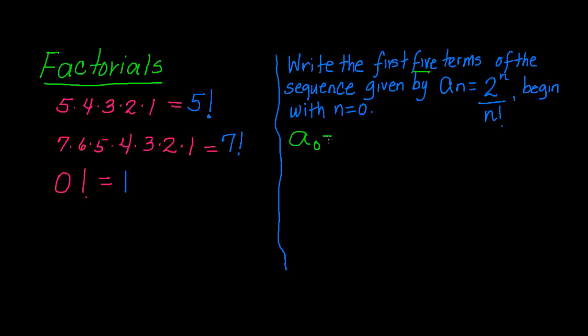So a₀, and remember if n is equal to 0, that means anywhere there's an n in my expression, I'm going to substitute for 0. So 2 to the 0 power over 0 factorial. That equals 2 to the 0 power. Anything you raise to the 0 power will equal 1. And by this definition, 0 factorial is 1, so this equals 1.